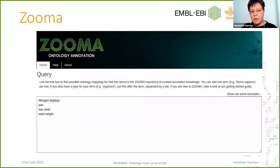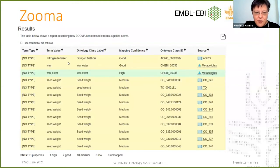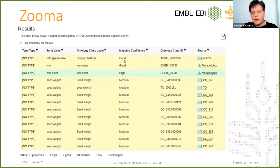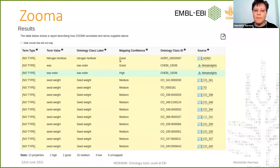If I do that on Zooma, the results show that 'nitrogen fertilizer' has been mapped to a term defined in the agronomy ontology. Clicking on this will take you to OLS to view the information there. It gives you a 'good' mapping confidence, because it maps exactly to the label of the ontology term. However, you can't be beyond a shadow of a doubt sure that this is in fact the best term to be used for nitrogen fertilizer, because we don't have curated information where a curator has explicitly confirmed this mapping.